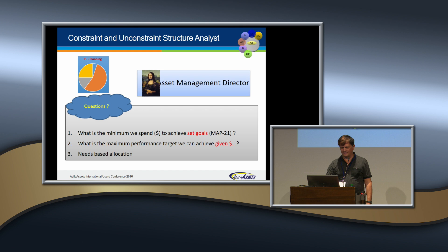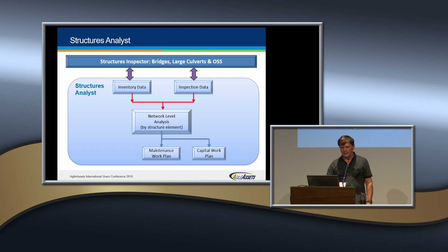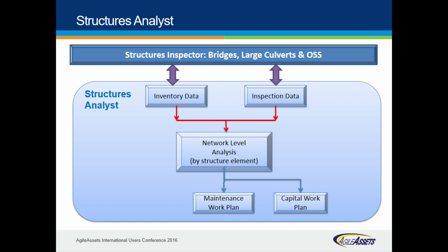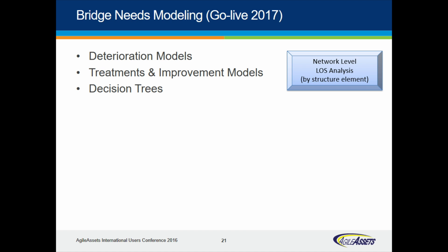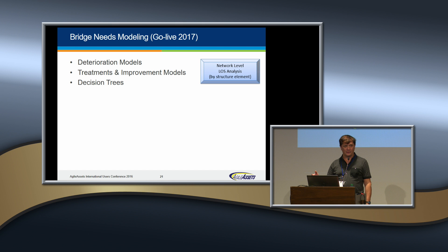Structures analyst, in the simplest sense: we're taking inventory and inspection data, running it through an engine, and spitting out a maintenance and capital work plan. The needs model includes deterioration — we worked with City University of New York, taking 20 to 30 years of bridge inspection data to look at how the various elements of bridges in New York State deteriorate over time. We have empirical models — not regionally based, but more generalized deterioration models by element.